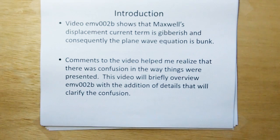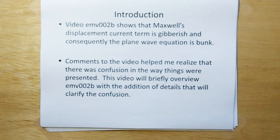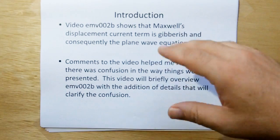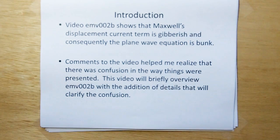In video 2b we showed that Maxwell's displacement current term is gibberish and consequently the plane wave equation is bunk. The displacement current term is needed for Maxwell's plane wave derivation, which is the model for light that's been accepted for the past hundred and some odd years.